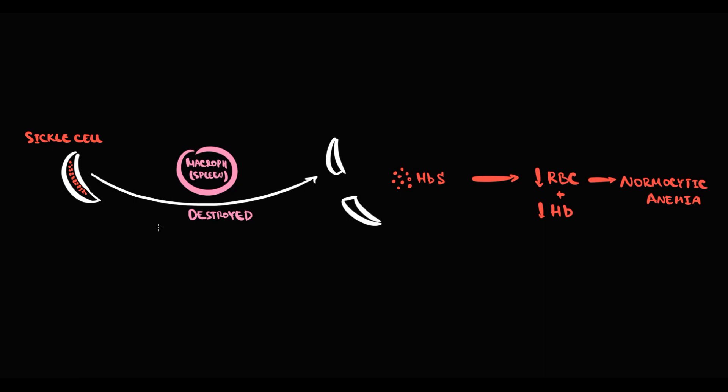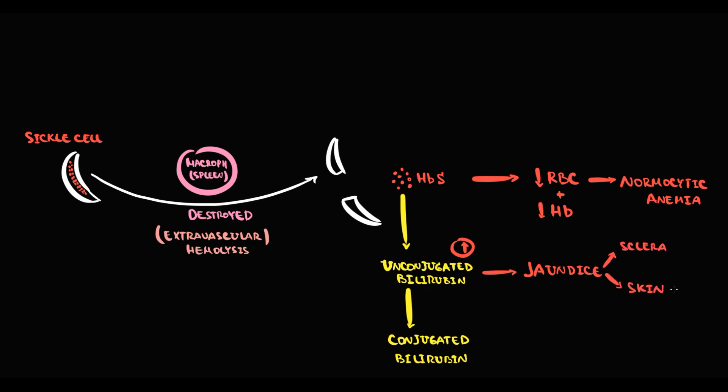This process we call extravascular hemolysis. Once hemoglobin S is released into the blood, initially hemoglobin degrades to unconjugated bilirubin, and then to conjugated bilirubin. So the level of both bilirubins increases. Increasing unconjugated bilirubin causes jaundice: initially yellowing of the sclera, and then yellowing of the skin. Increasing conjugated bilirubin causes increasing concentration of bilirubin in the bile. As a result, it greatly increases the risk of bilirubin gallstones, a condition known as cholelithiasis. Also, increasing excretion of conjugated bilirubin with the urine causes a very dark color of the urine.